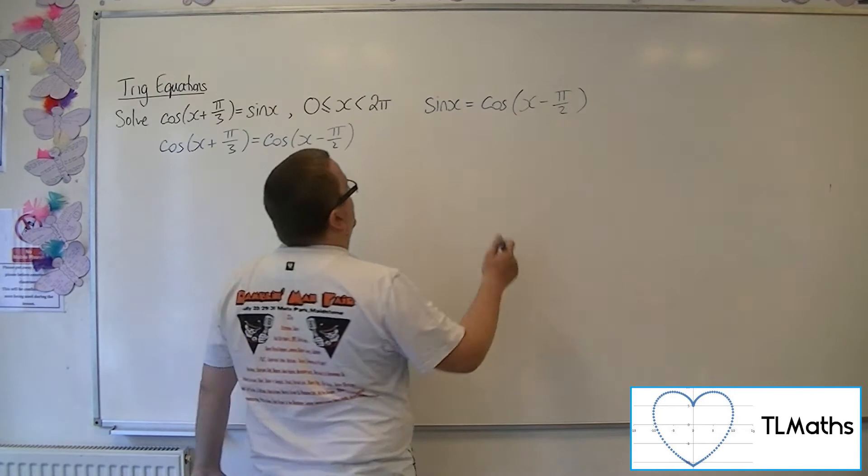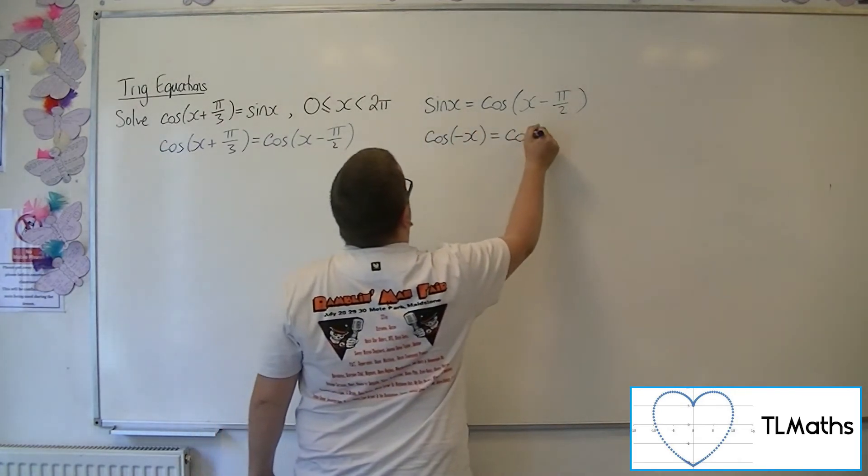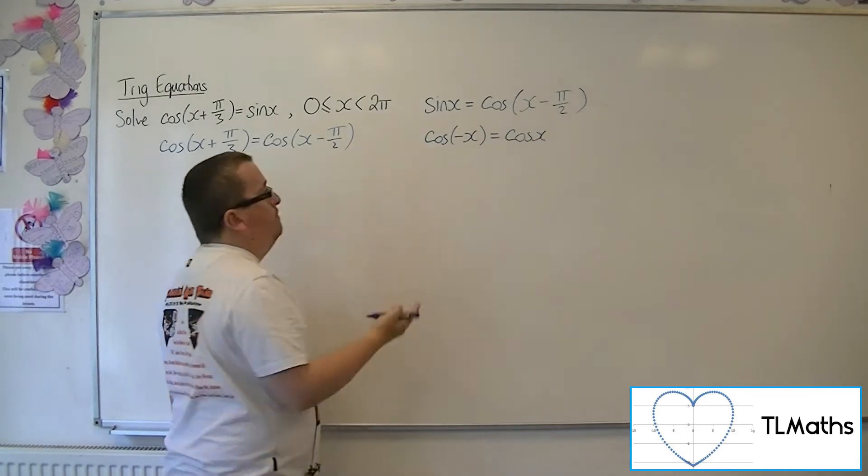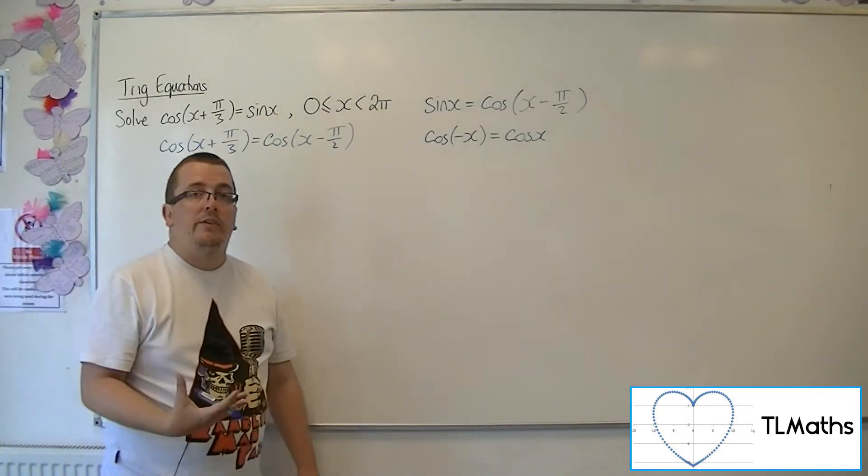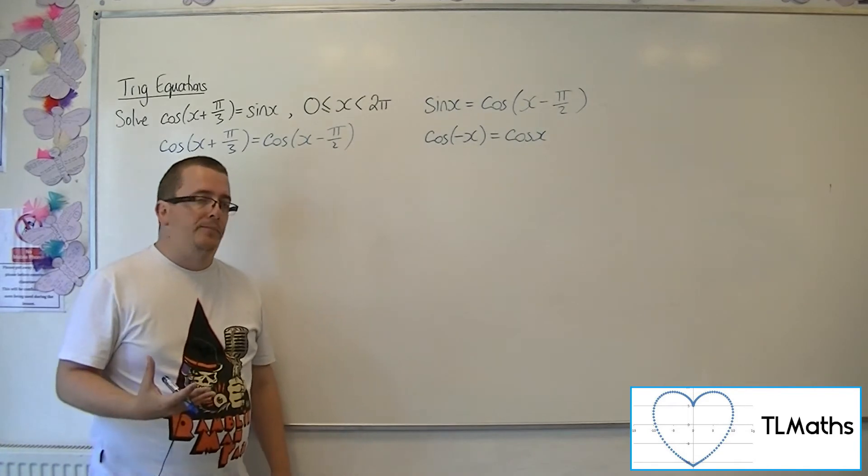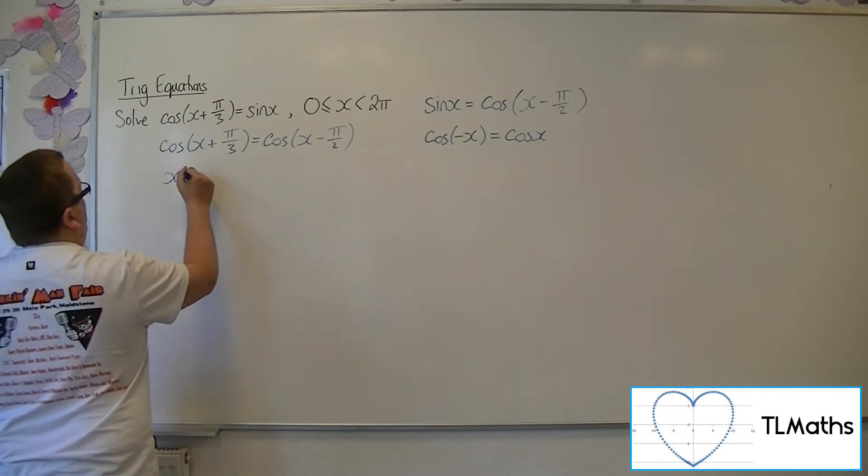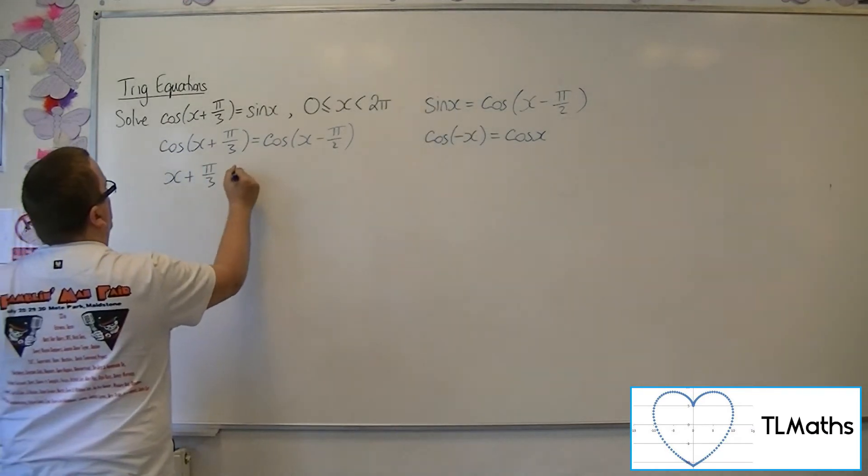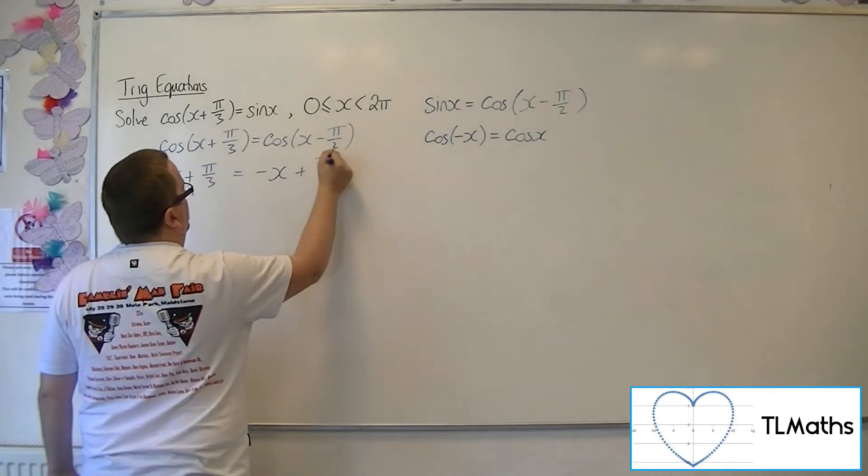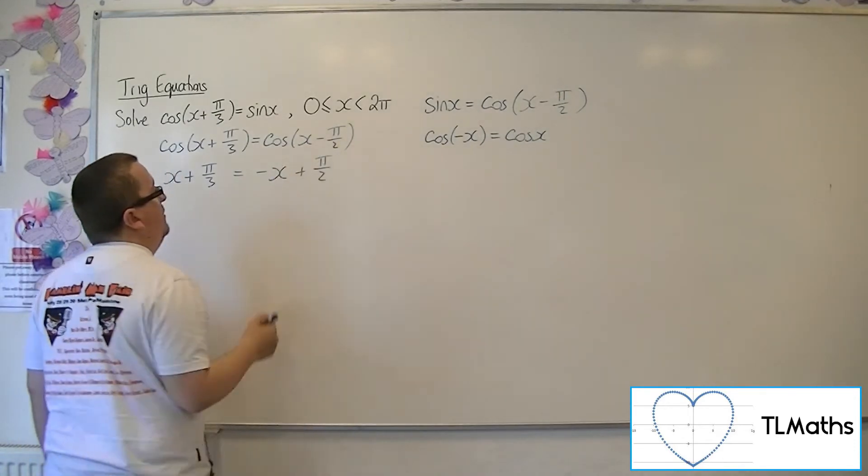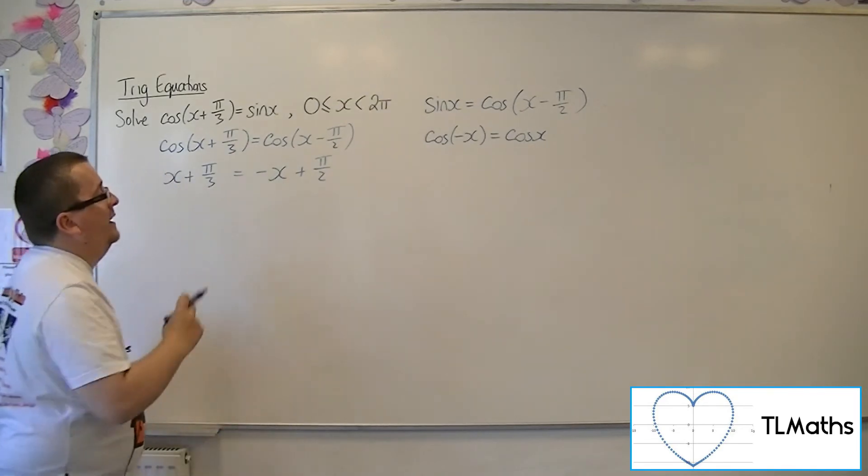So I need to remember that cosine of minus x is the same as cosine of x, because cosine is a reflection of itself in the y-axis. So that means that I can say that x plus pi over 3 must be equal to minus x plus pi over 2. I can change the sign of both of those pieces inside the cosine function and get exactly the same thing.